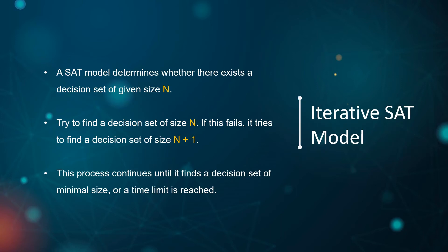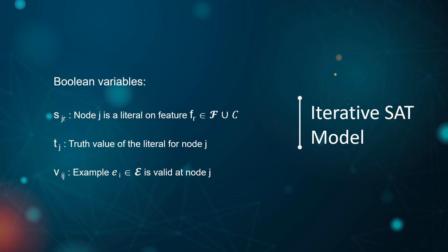We first design a SAT model which determines whether there exists a decision set of a given size n. To find the minimum n, we then iteratively call this SAT model while incrementing n until it is satisfied or a time limit is reached. The encoding uses a number of boolean variables: S_jr means node j is a literal on feature f; T_j is the value of the literal for node j; V_ij means item i is covered at node j.